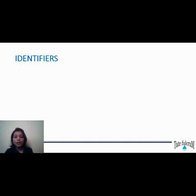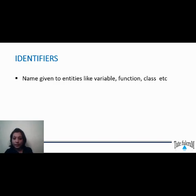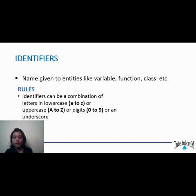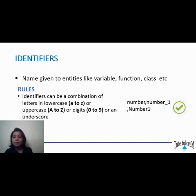Now let's see about identifiers. Identifiers are names given to entities like variable, function, class, etc. There are certain rules you have to follow when using an identifier. Identifiers can be a combination of letters, either in lowercase or uppercase. You can also include digits or an underscore. For example, number, number_1, and number1 are all valid identifiers. You can use these as your variable name, function name, or class name.